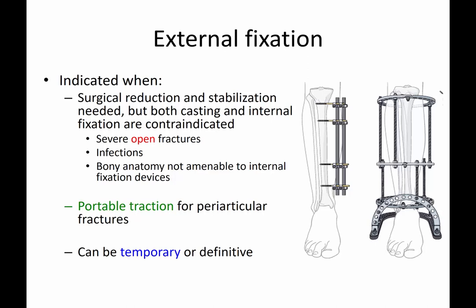External fixation can be used as a portable traction technique for periarticular fractures. For example, with a very comminuted fracture of the ankle joint where the foot is impacted up and shortened, you put pins in the foot, connect them to pins above the ankle, and distract — pulling in two directions and locking the fixator. This can be temporary or definitive; for instance, if a person with a severe open fracture never achieves good soft tissue coverage, the external fixator can stay until the bone heals.